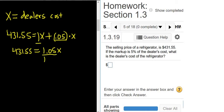To finish we just divide by 1.05. Putting this into the calculator is 431.55 divided by 1.05. So exactly $411.